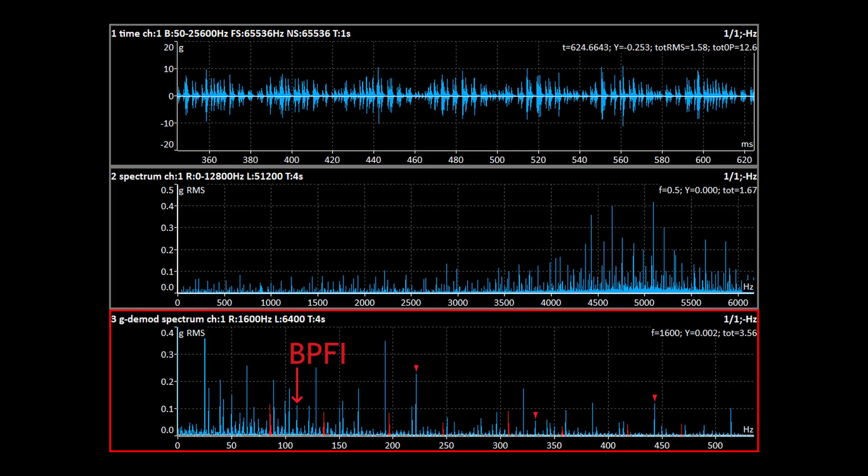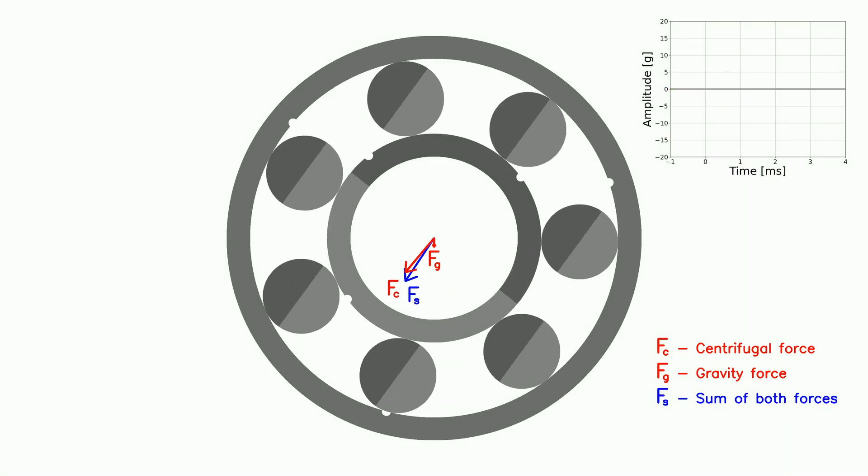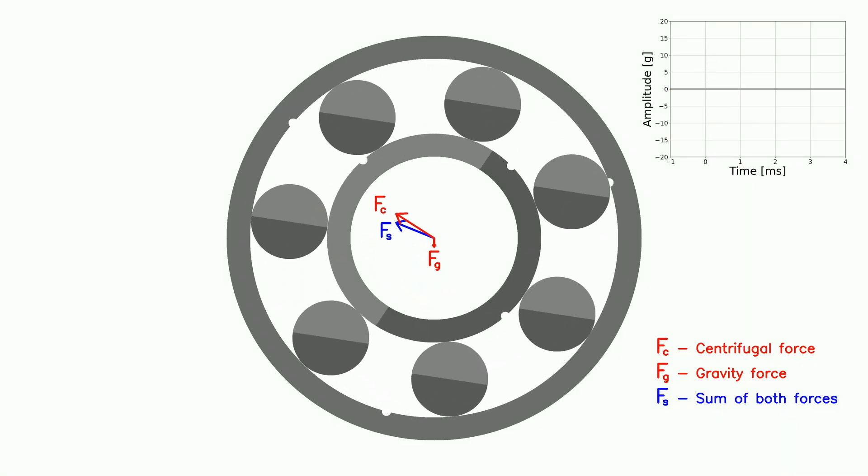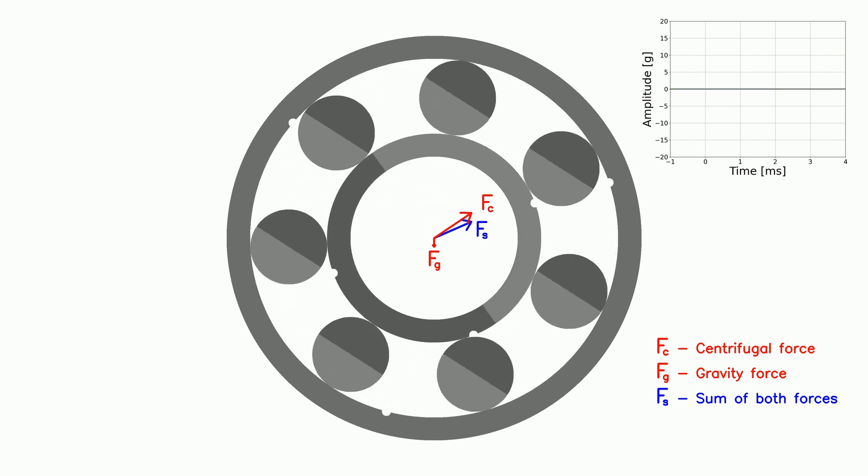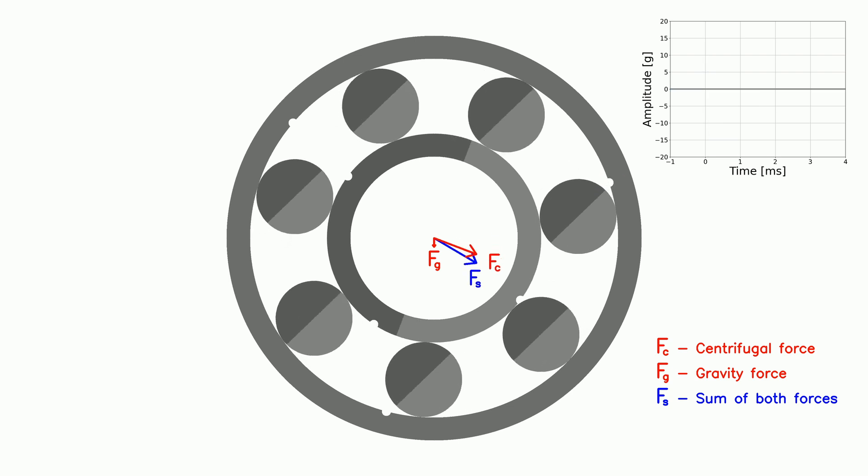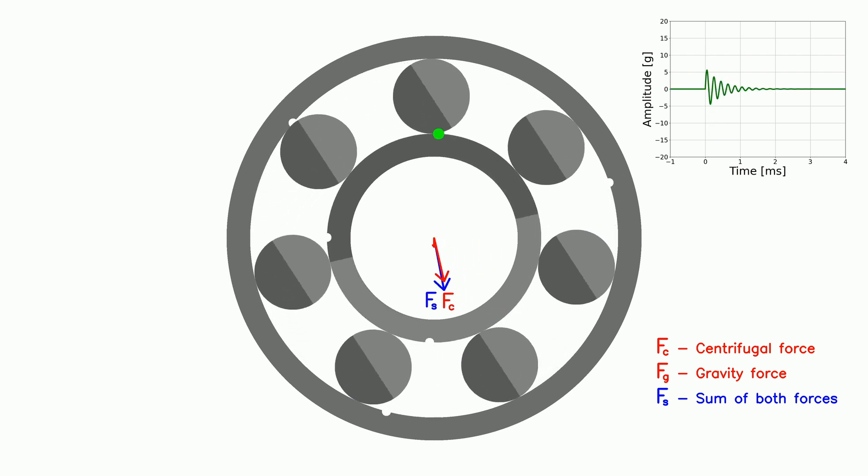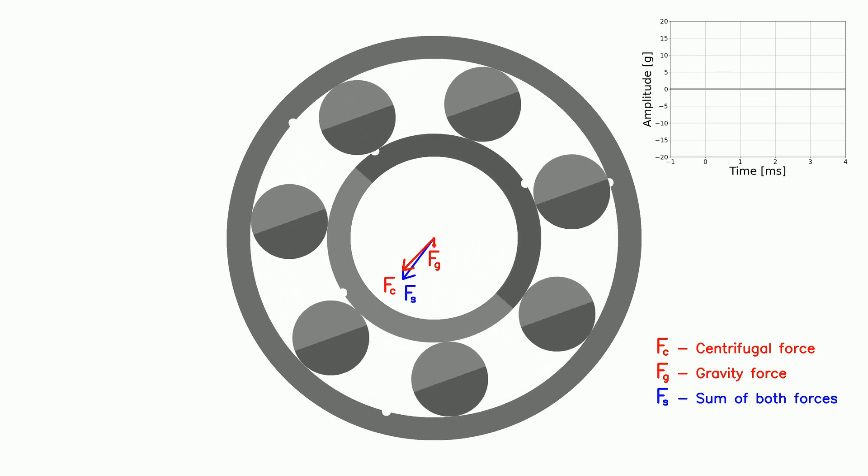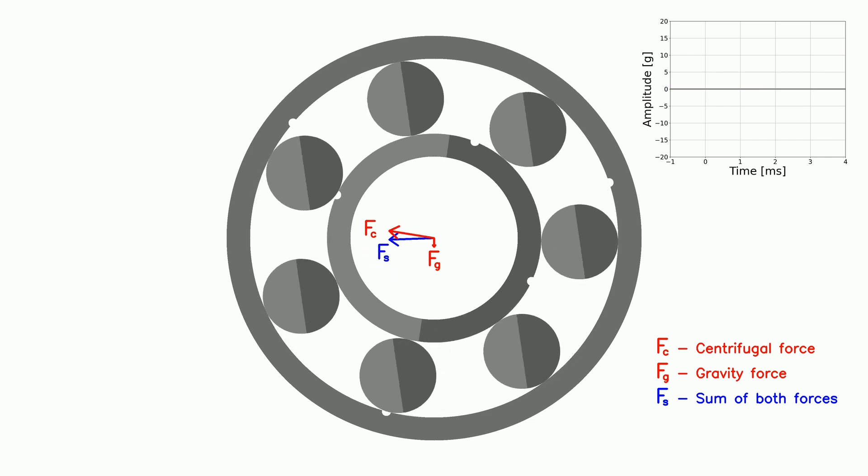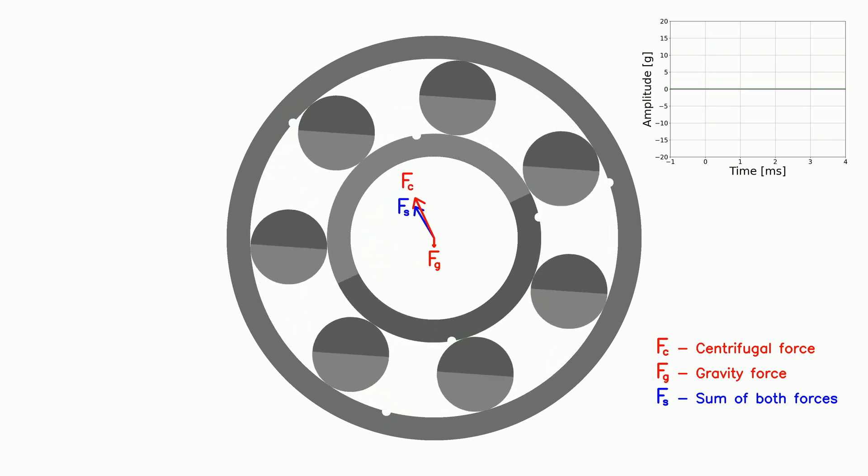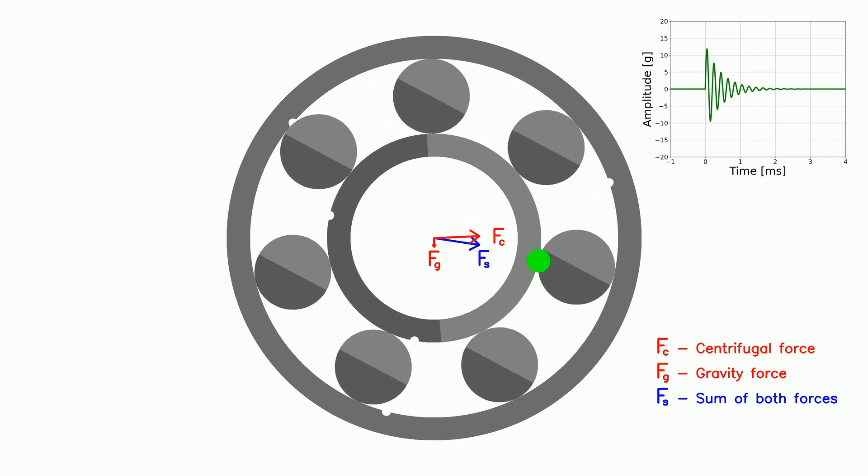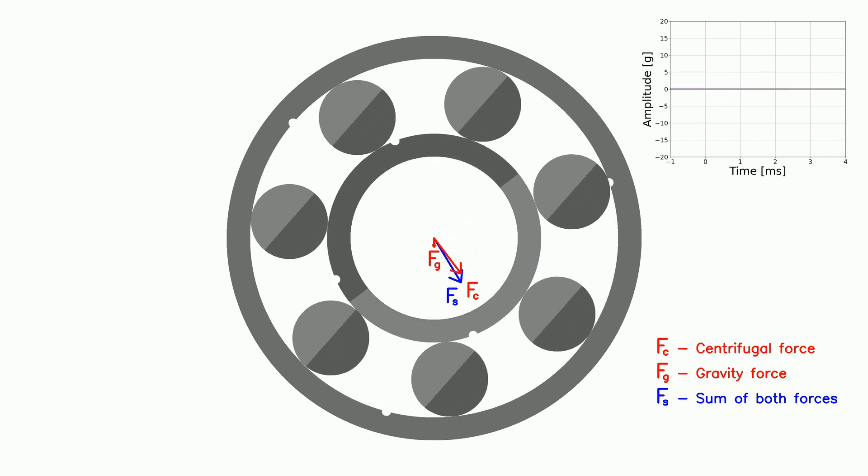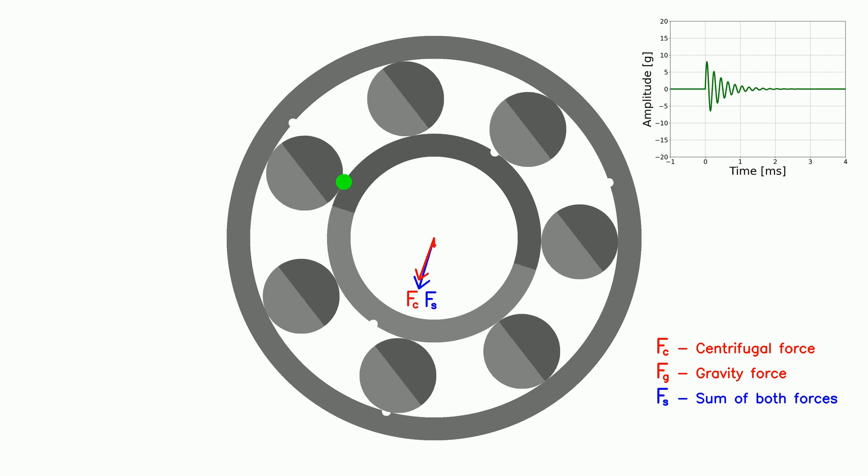We must note that this almost never happens. The centrifugal force from unbalance is usually much larger than the downward force of gravity. When examining bearing faults, unbalance is usually behind modulation. Effect of the shaft's weight is negligible compared to the effect of unbalance.